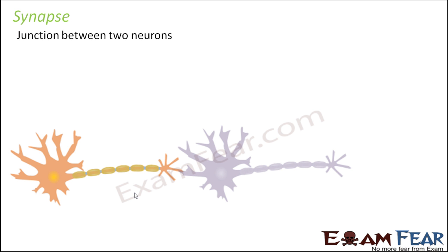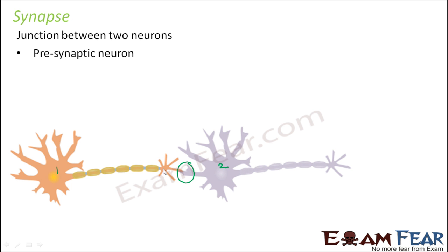A synapse is a junction between two neurons. Here if you see, these are two neurons — neuron one and neuron two — and the junction between them is known as the synapse. The synapse is formed by a pre-synaptic neuron and a post-synaptic neuron. The first neuron's end is the pre-synaptic neuron and the second neuron is the post-synaptic neuron.